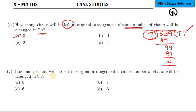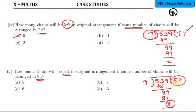Fifth question: how many chairs will be left in original arrangement if same number of chairs will be arranged in 9s? In original arrangement, chairs left out - which is the original? 539. Same method, you are going to arrange it in 9, so you have to divide by 9. At the end of division, you get the remainder as 8. So when you organize into 9 chairs per group, you get totally 59 groups of chairs, and 8 chairs will be pending at the end. So the answer is 8.